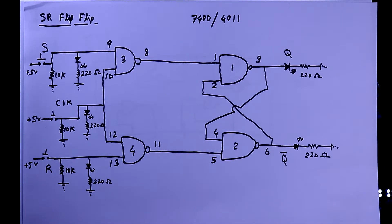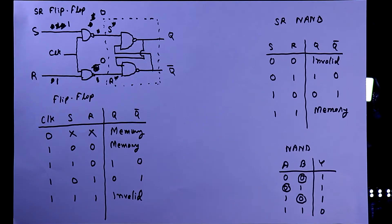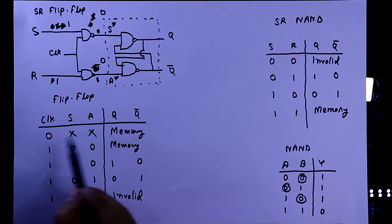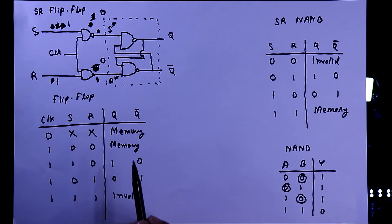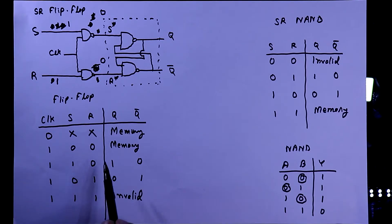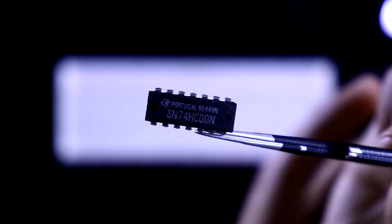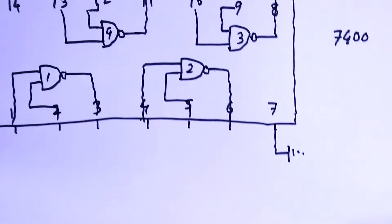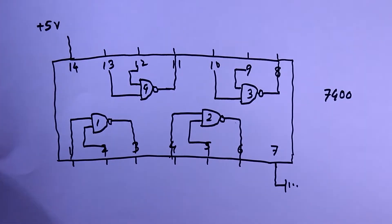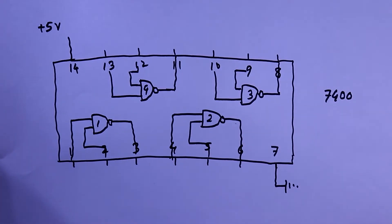This is the circuit. Now with this we will verify the truth table of the SR flip-flop. In the last video we already saw and discussed the truth table of the SR flip-flop — link in the description below. Now we have to verify it. I'm placing the IC 7400 here.